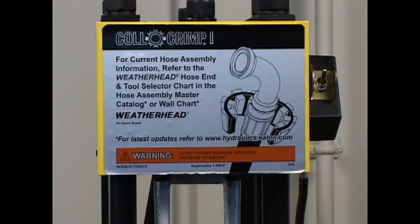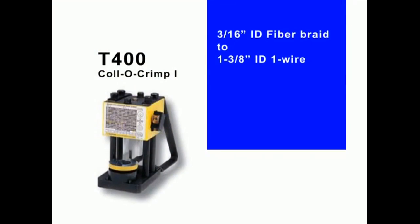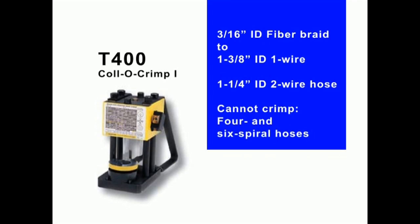The T-400 ColoCrimp 1 offers crimping capabilities ranging from 3/16 inch ID fiber braid through 1 and 3/8 inch ID 1 wire hose and 1 and 1/4 inch ID 2 wire hose. The T-400 cannot crimp 4 and 6 spiral hoses.